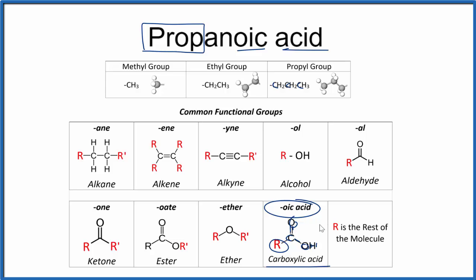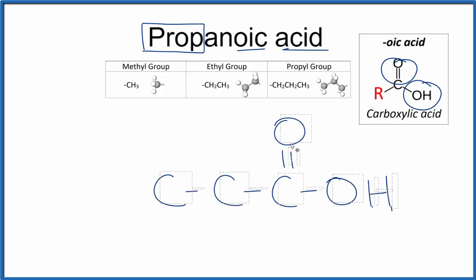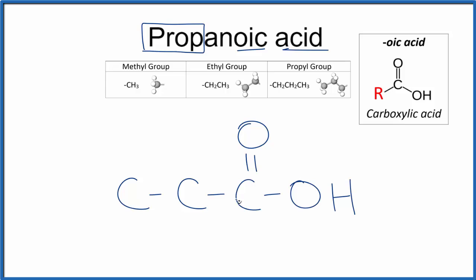So let's move this up here and write the formula for propanoic acid. So for prop, that's those three carbons we talked about. And then we're gonna add that double bonded oxygen and this OH. We could put it on this carbon or this carbon here. Let's just put it over here. So we have three carbons and then right here, this is our carboxylic acid. That's why it's called propanoic acid.